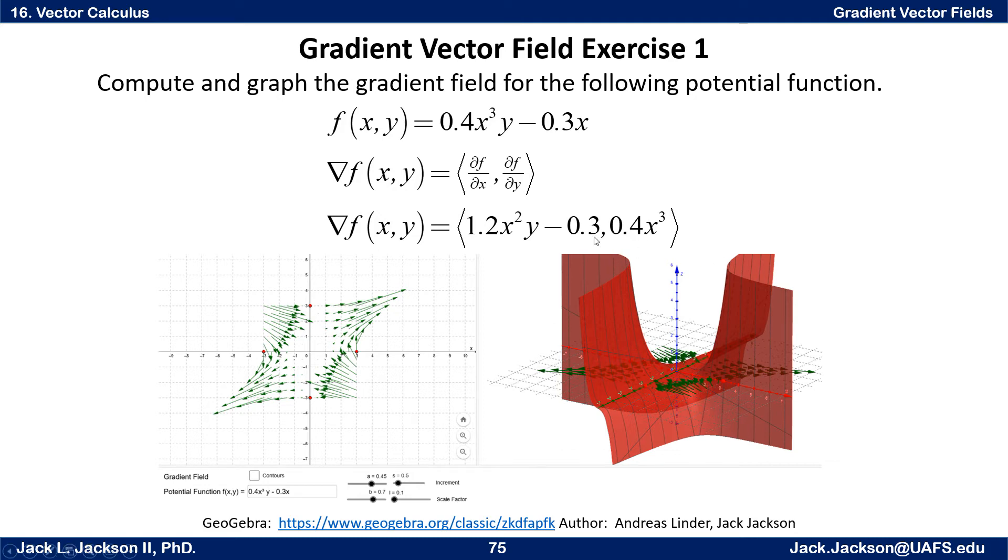So we would just take the derivative with respect to x. The y and the constants are treated as constants just like the 0.4. So we still got 0.4 and y. And the derivative of x³ is 3x². So the 3 ends up multiplying by the 0.4 to give me 1.2. Then I've got x²y. And of course the derivative here is just -0.3. So the x component is 1.2x²y - 0.3.